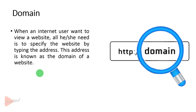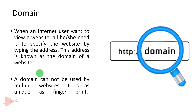This is the website address — the address we type, such as google.com, www.facebook.com, and youtube.com. These are examples of a domain. An important point is that a domain cannot be used by multiple websites — it is as unique as a fingerprint.